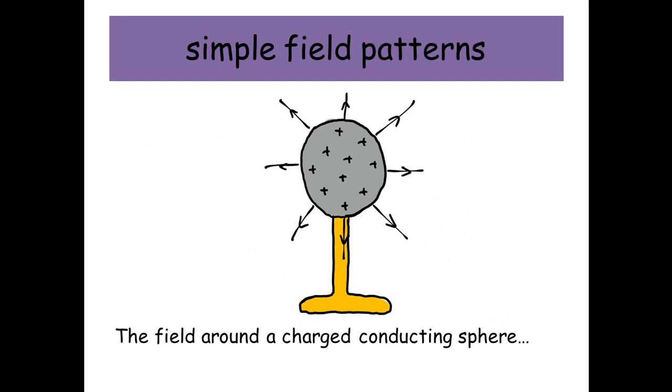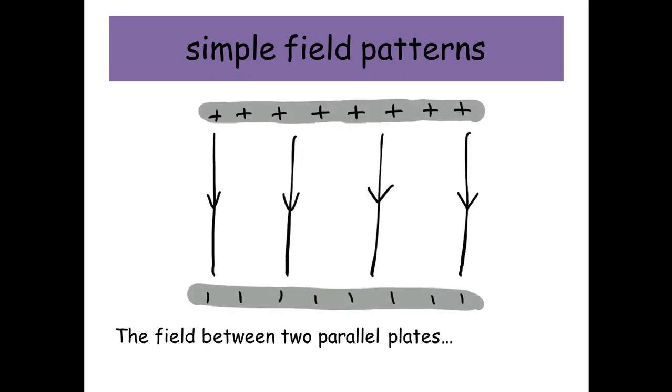Around a charged conducting sphere, this is the pattern you'd see. And if you had two plates, one that's positively charged and one that's negatively charged, brought close to each other, this is the field you would see. And this is what we call a uniform field going from positive to negative.